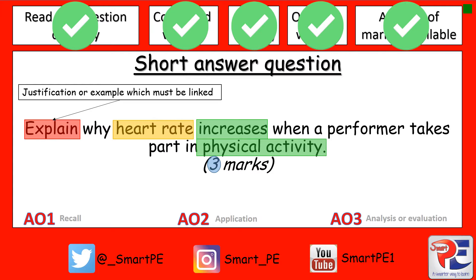Before we answer the next part of the question we need to think about the key terms associated with heart rate. These could be stroke volume or cardiac output. For the second mark, let's talk about stroke volume first. What you need to do is say what happens to your stroke volume in order to meet the demand for oxygenated blood.